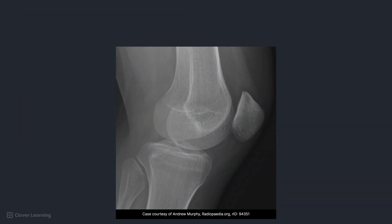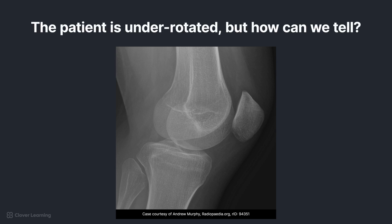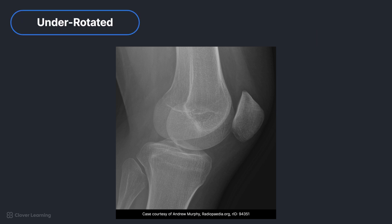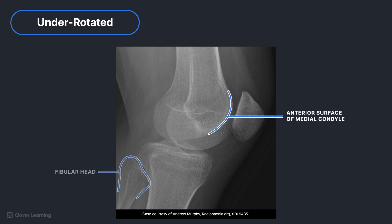Before we move to the patella, we should discuss how to recognize under and over rotation in a lateral knee, because this is a common error and it can be difficult to determine how to correct the problem. In the first image, the patient is under-rotated. The key anatomy to locate to determine the superimposition error is the anterior surface of the medial condyle and the placement of the head of the fibula. If the anterior surface of the medial condyle is farther from the patella and the fibular head has minimal or no superimposition by the tibia, the knee is too far from the image receptor and must be rotated externally more.